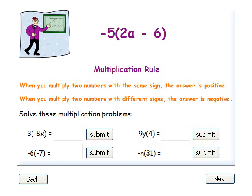Let's solve these multiplication problems using the multiplication rule. 3 times negative 8x. Here, the two numbers have different signs, so our answer will be negative. Negative 6 times negative 7. The two numbers have the same sign, so our answer will be positive.